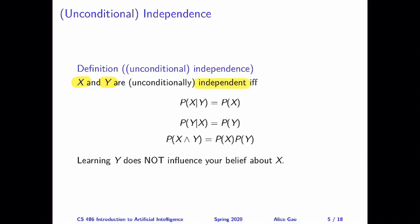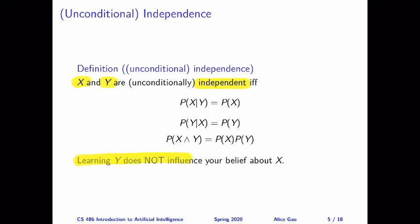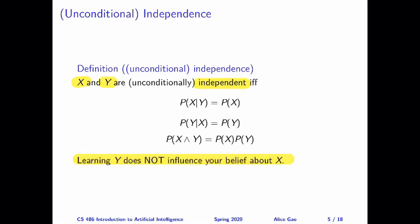Intuitively, what does unconditional independence mean? It means that learning the value of one variable does not influence our belief about the other variable. And this relationship is symmetric — so even though I've only written out the English description for one direction, the other direction also holds. Learning the value of y does not affect our belief about x, and vice versa, learning the value of x does not affect our belief about y.